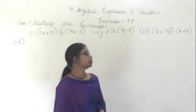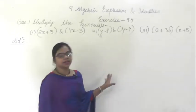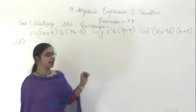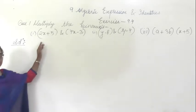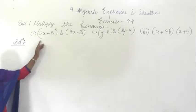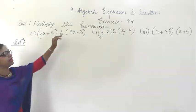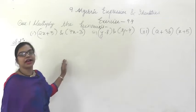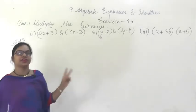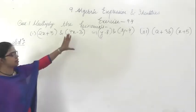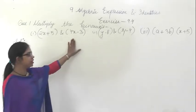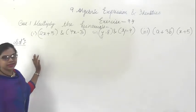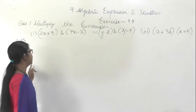Good morning all of you. Today we will start exercise 9.4. In the first question in exercise 9.4 it says multiply the binomial. As we have studied, binomial means it will have two terms — first is this and the second one is this. So what we have to do is multiply the binomials.